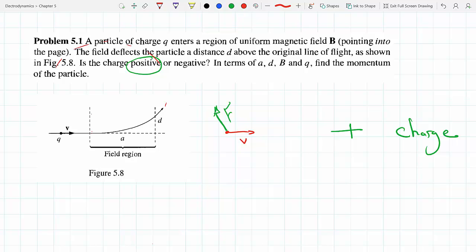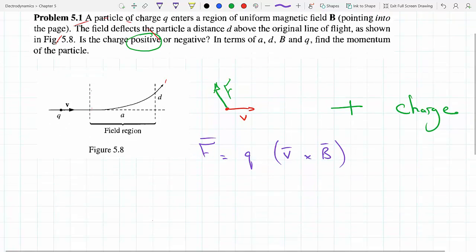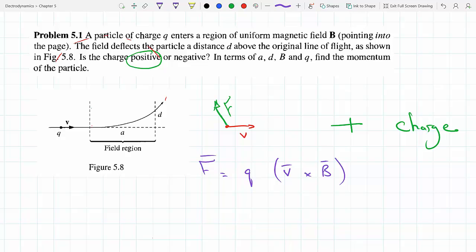We start with Lorentz force law, where F equals q(v cross B). We know this is going to be a circular trajectory, so we know from Newton's second law—the magnetic field is the only force available—so Fm has to equal mv²/r, with r being the radius of the trajectory.